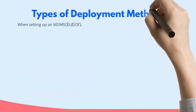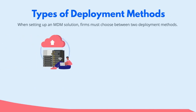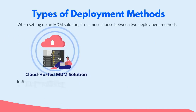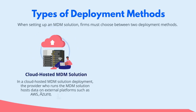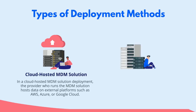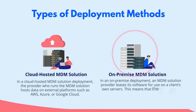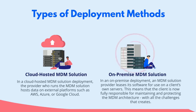When setting up an MDM solution, clients must choose between two deployment methods. The first is cloud-based: the provider hosts data on external platforms such as Google Cloud, making it a straightforward choice for quickly setting up an MDM solution. The second is on-premise: the provider leases its software for use on a client's own servers, making the client fully responsible for maintaining and protecting the MDM architecture. On-premise solutions are ideal for companies that need to keep all data in-house, provided they have the time and money to spare.